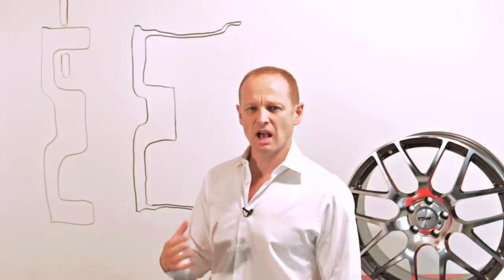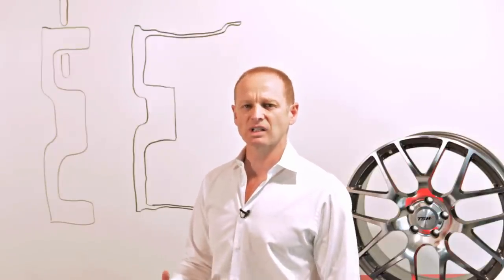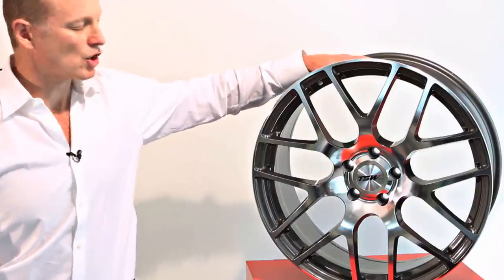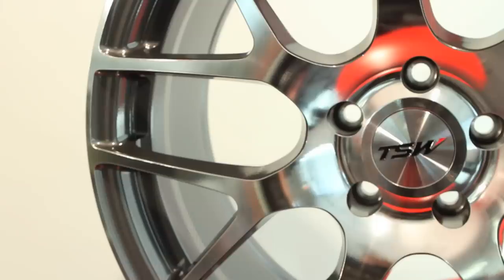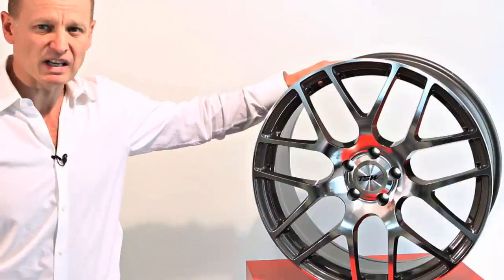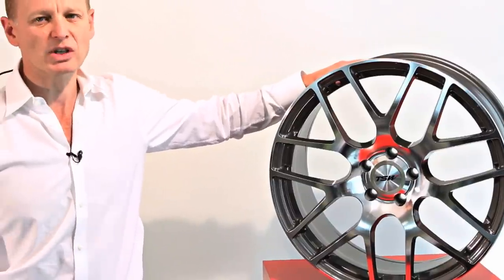Some of the other advantages about the TSW rotary forged wheels is that we make them in a massive array of sizes. If you look at the TSW Nürburgring we make this in 17, 18, 19, 20 and just being released now 21 inch and also 22 inch sizes.